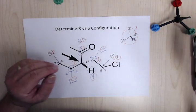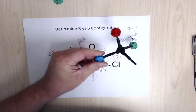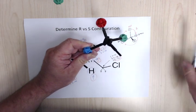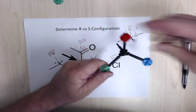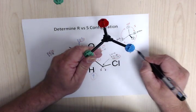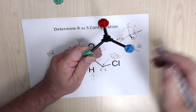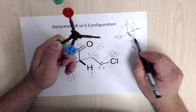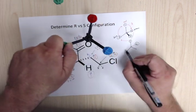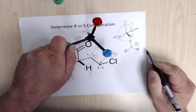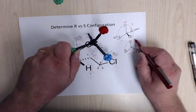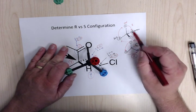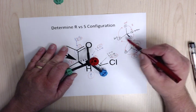The second method is the steering wheel method. Assign colors to priorities 1, 2, 3, and 4. You need to get group 4 behind, so rotate the molecule accordingly. Once group 4 is in the back, trace 1 to 2 to 3 — if it goes counterclockwise, like turning left, it's S. If you think it looks clockwise, remember: with the steering wheel method you must get group 4 behind first.